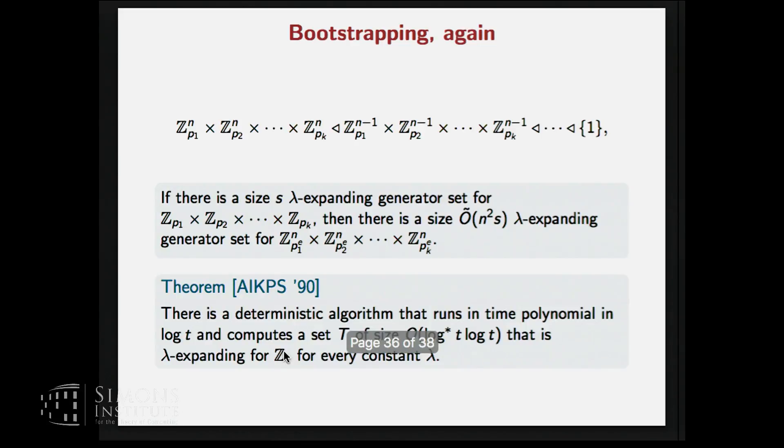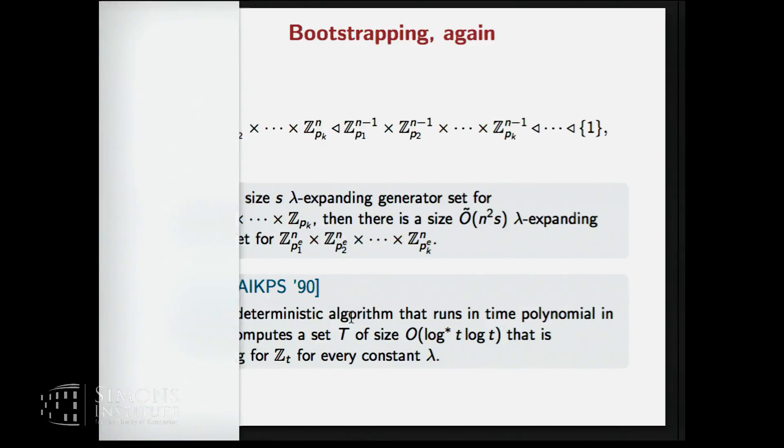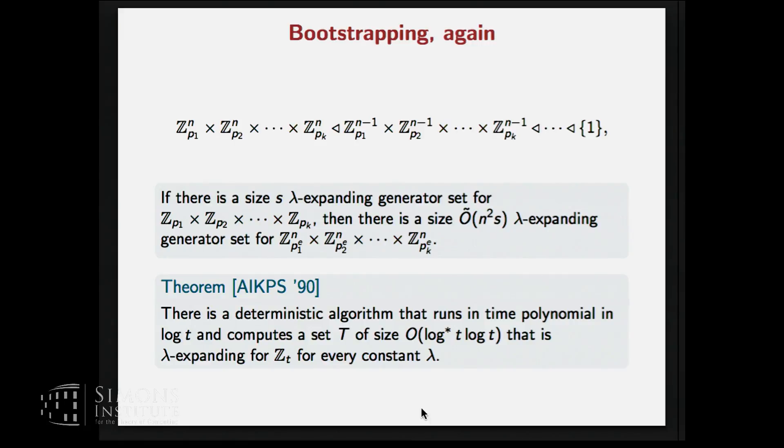And now comes this simple group. By simple I don't mean in mathematical sense but just the one which looks simple. And there is a result by Ajtai and others which says that for the group Zt, we have an expanding generating set for every constant lambda and that is of size almost logarithmic in t. And now this Zp1 x Zp2 x Zpk that is isomorphic to Zt for t equal to product of those primes. So we can actually construct an expanding generating set for that group.